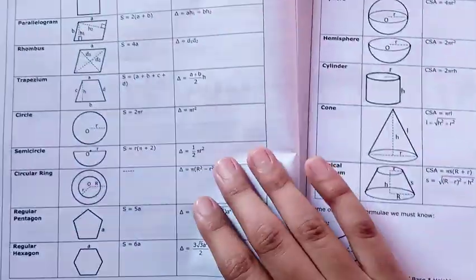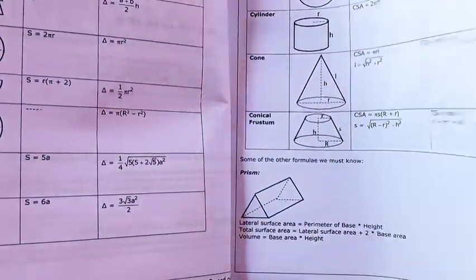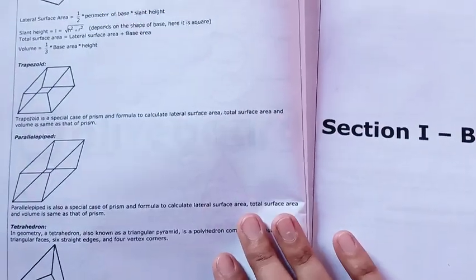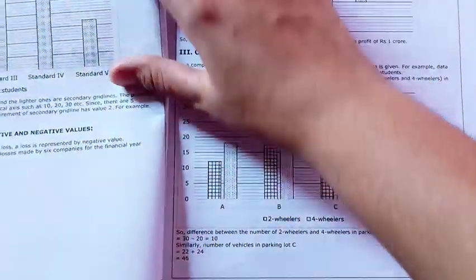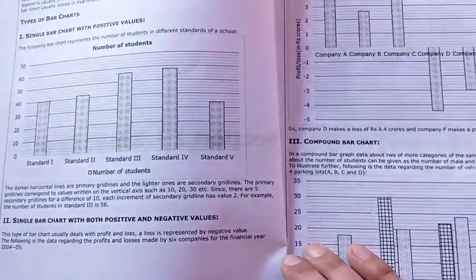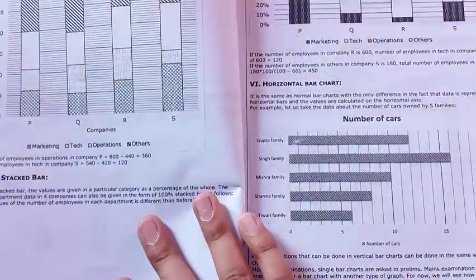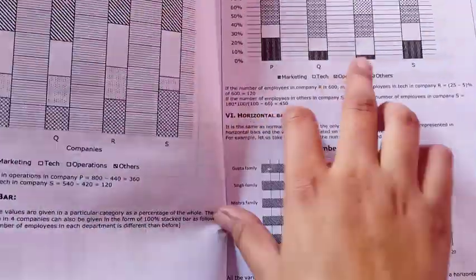Every basic concept I can see is given. And after that there are 2D and 3D formulas also given, which are sometimes used in DIs because sometimes mensuration-based DIs are also there. Then section one: basic charts. They have provided which types of charts are there in the DIs, and they have given examples.